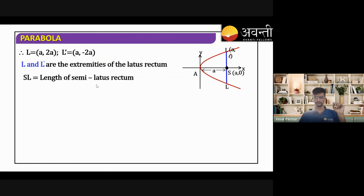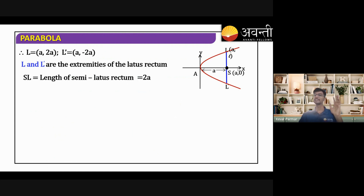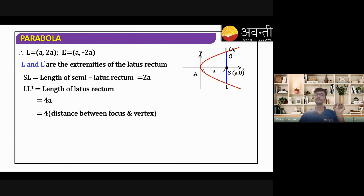To find the length of the latus rectum LL', we use the distance formula between L and L'. SL is called the semi-latus rectum, which has length 2a. You can see S is (a, 0) and L is (a, l), so by distance formula SL = 2a. Therefore the length of the latus rectum is 4a. This is very important — it equals 4 times the distance between focus and vertex.